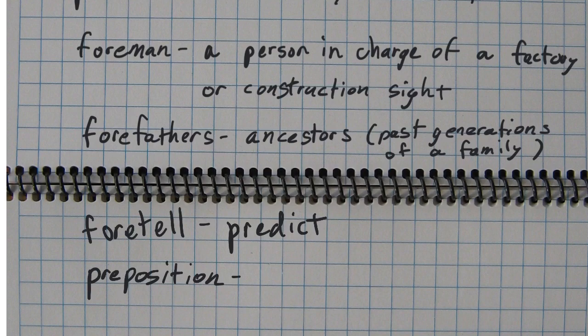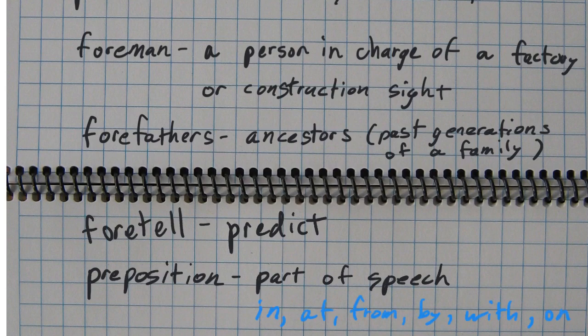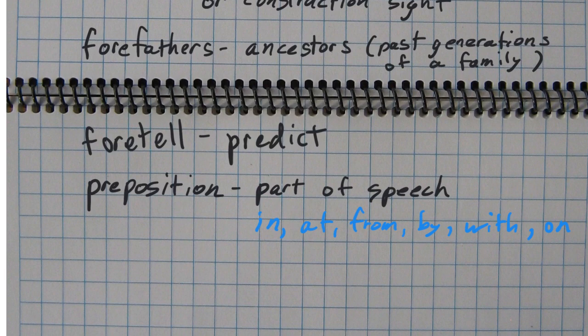And this is actually a part of speech. So you know we have nouns, verbs, adjectives, adverbs. Prepositions are another part of speech or another type of word, and they include words like in, at, from, by, with, on. Those are a few examples, very common words.